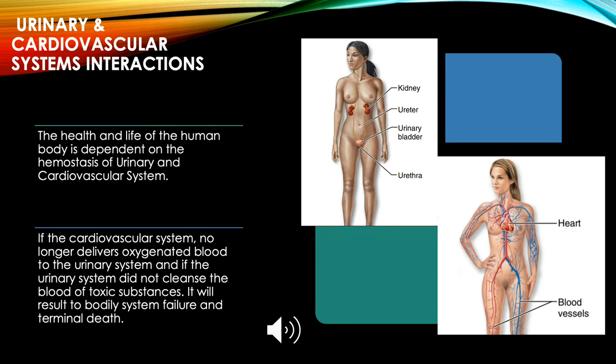The health and life of the human body depend on the homeostasis of the urinary and cardiovascular systems. If the cardiovascular system no longer delivers oxygenated blood to the urinary system, or if the urinary system fails to cleanse the blood of toxic substances, it will result in bodily system failure and terminal death.